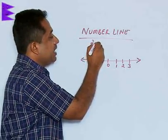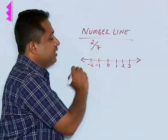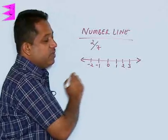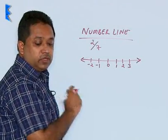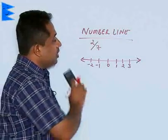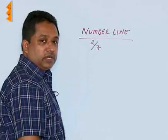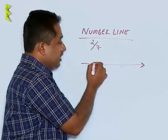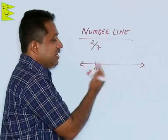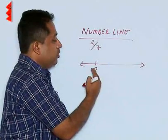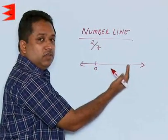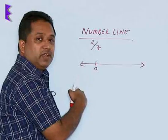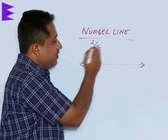If you are having a rational number 2 by 7, we are going to find out how to plot that on the number line. First see that this number 2 by 7 is a positive number. If it is a positive number, then it is obvious that it is going to lie on the right side of 0 because all positive numbers will be on the right side of 0 and all negative numbers will be on the left side of 0.